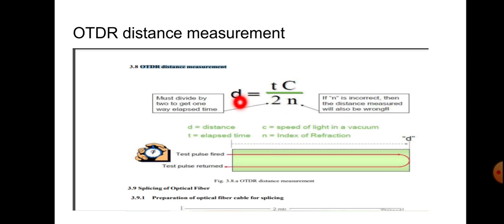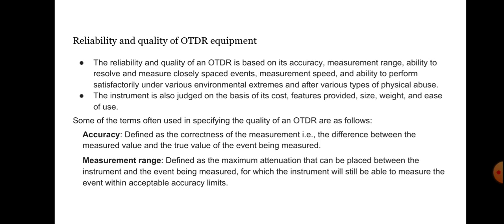OTDR is characterized by its performance parameters, starting with dynamic range. The dynamic range decides the maximum length of fiber over which various measurements can be taken, and it is decided by the total pulse power and the sensitivity of the photodetector. The reliability and quality of the OTDR is based on its accuracy, measurement range, ability to resolve and measure closely spaced events, measurement speed, and ability to perform satisfactorily under various environmental extremes.